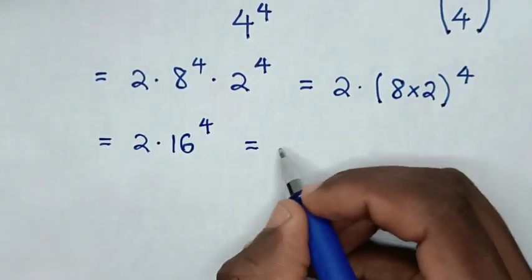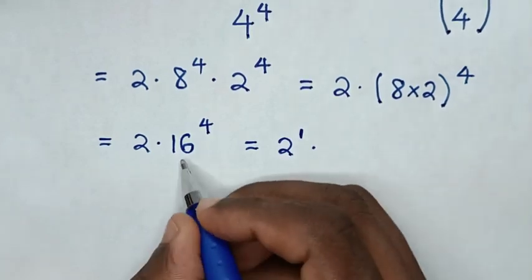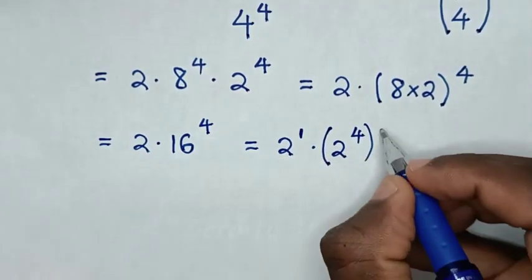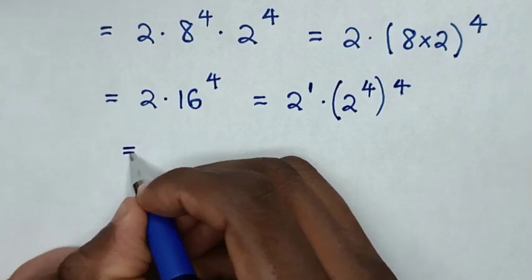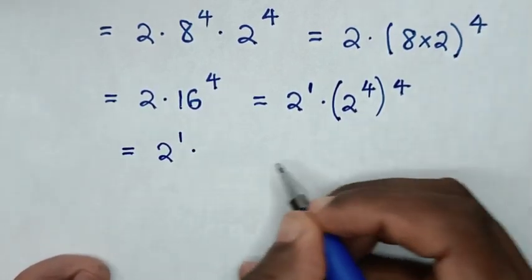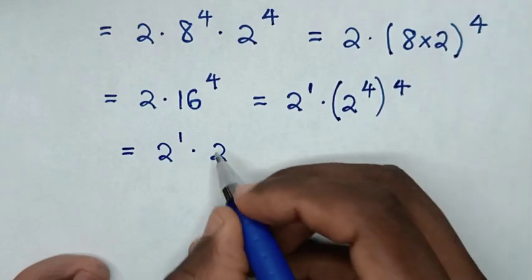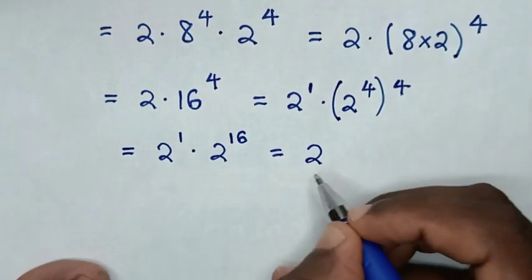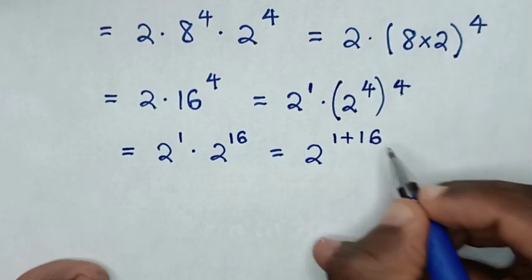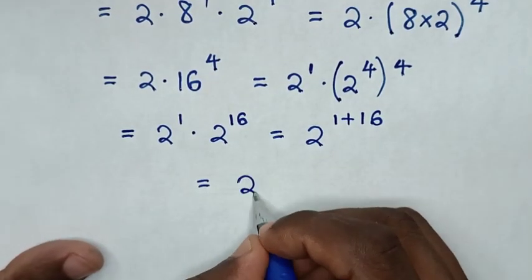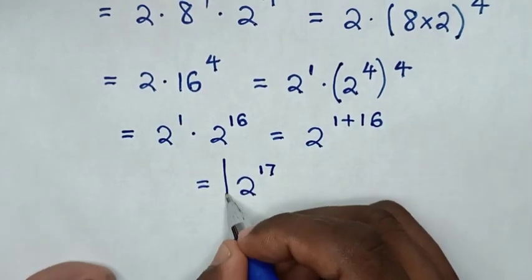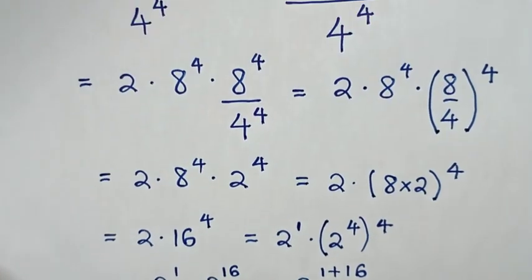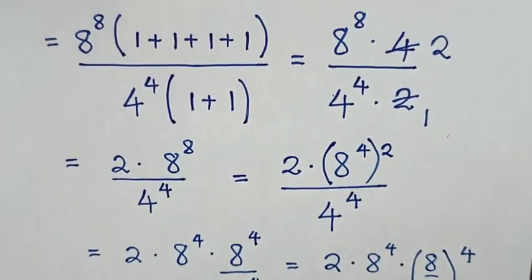Then it will be equal to 2 times 8 times 2 is 16, power of 4. Then it will be equal to 2, which is 2 power of 1, times 16 which is 2 power of 4, bracket to the power of 4. That gives 2 power 1 times 2 power of 16. Then, since they share the same base of 2, it will be 2 power of 1 plus 16, which is 2 power 17. So this is our final answer. Thank you for watching — don't forget to subscribe to my channel and see you in the next video, bye bye.